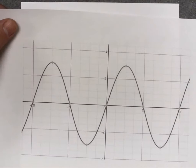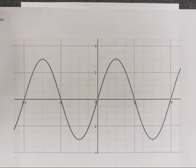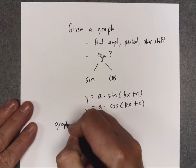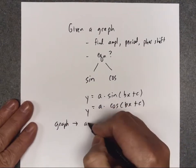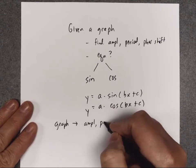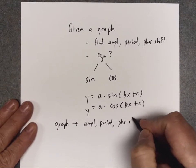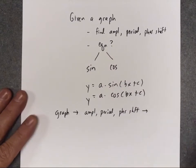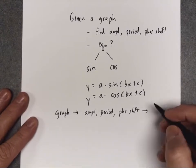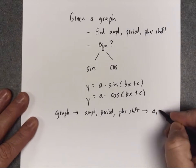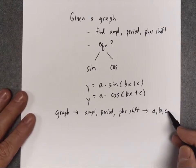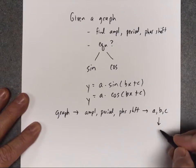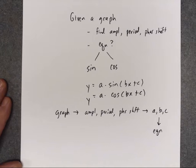Given a graph, we can look at it and figure out the amplitude, the period, and the phase shift. Once we know those, we can work backwards with our formulas and figure out the values for a, b, and c — the values that go into one of these formulas. And then once we know a, b, and c, we can write the equation.